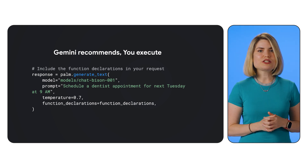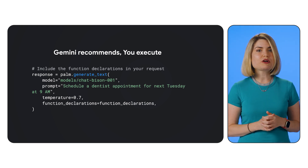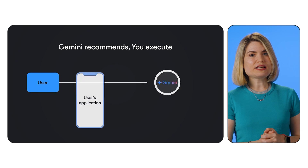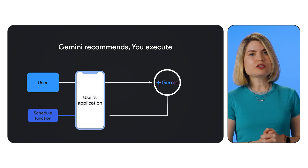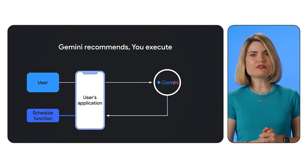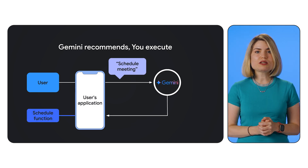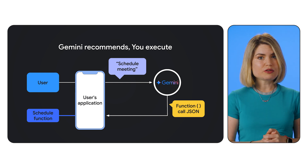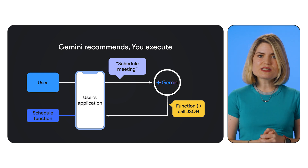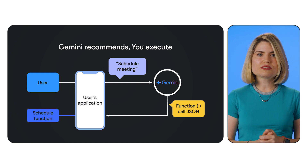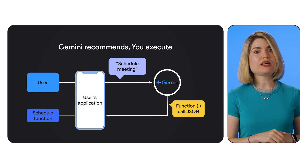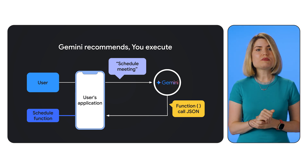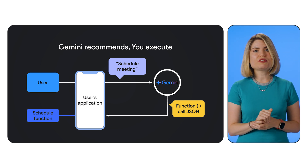Once your functions are defined, you simply pass your function declarations to Gemini as part of your request. Gemini will analyze your prompt and determine if it needs to call a function. If it does, it'll generate the appropriate function call JSON based on your declarations. An important note: Gemini doesn't actually execute the functions — you need to write code on your end to do that. Gemini's job is to figure out which function to call and what inputs to provide.